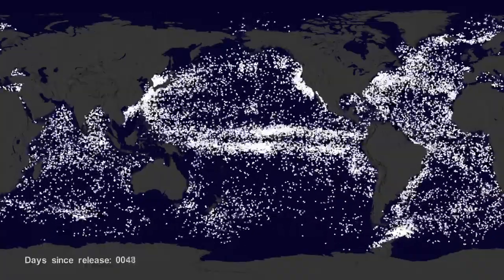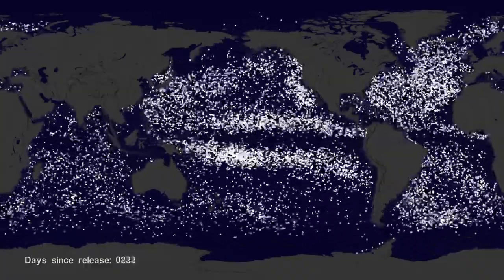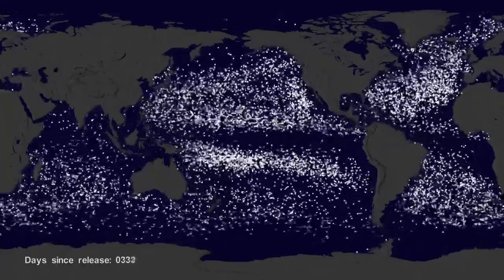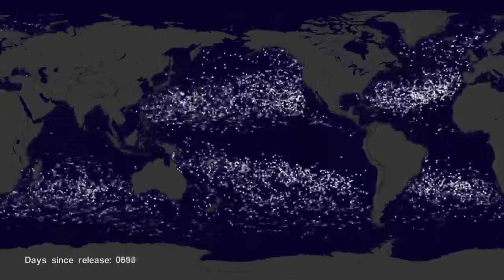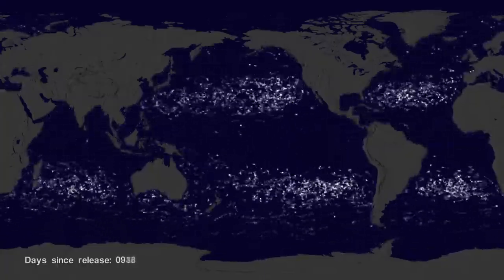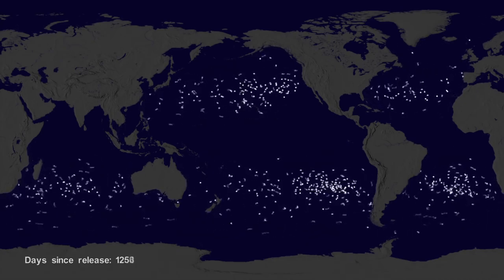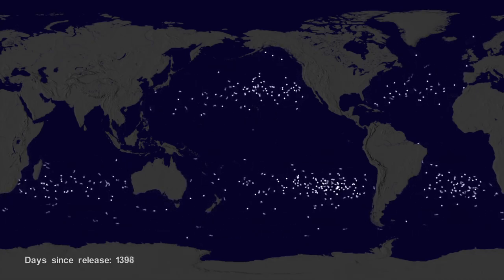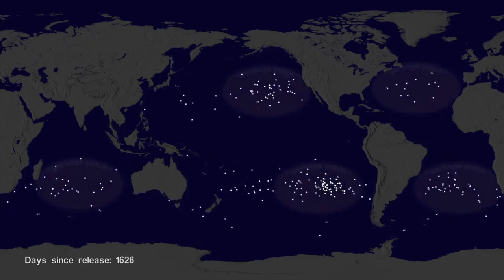If we let all the buoys go at the same time, we can observe buoy migration patterns. The number of buoys decreases because some buoys don't last as long as others. The buoys migrate to five known gyres, also called ocean garbage patches.